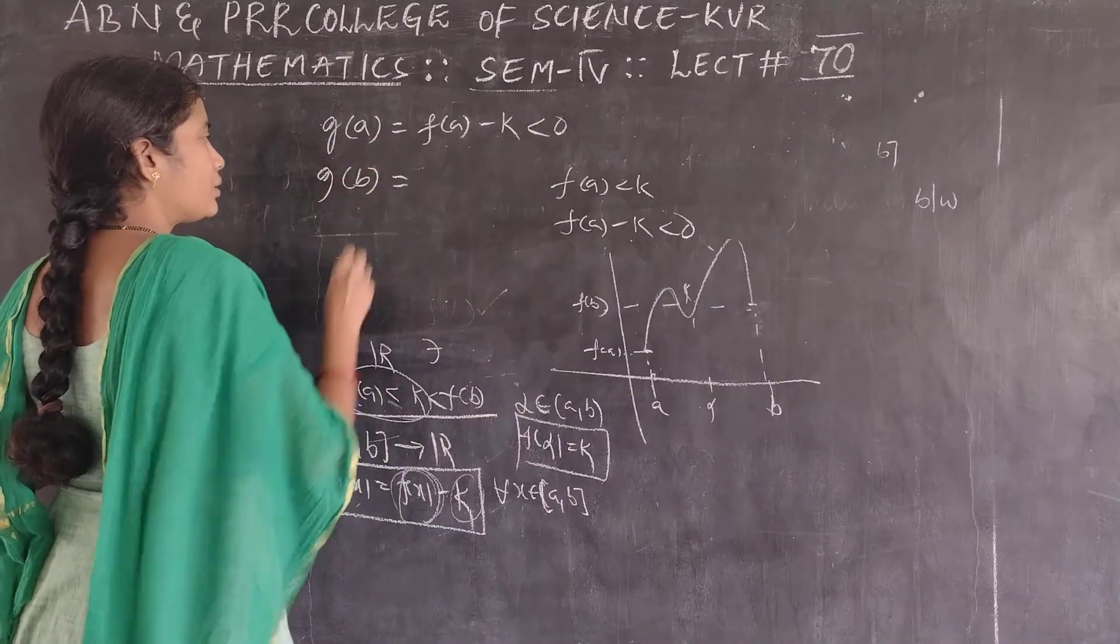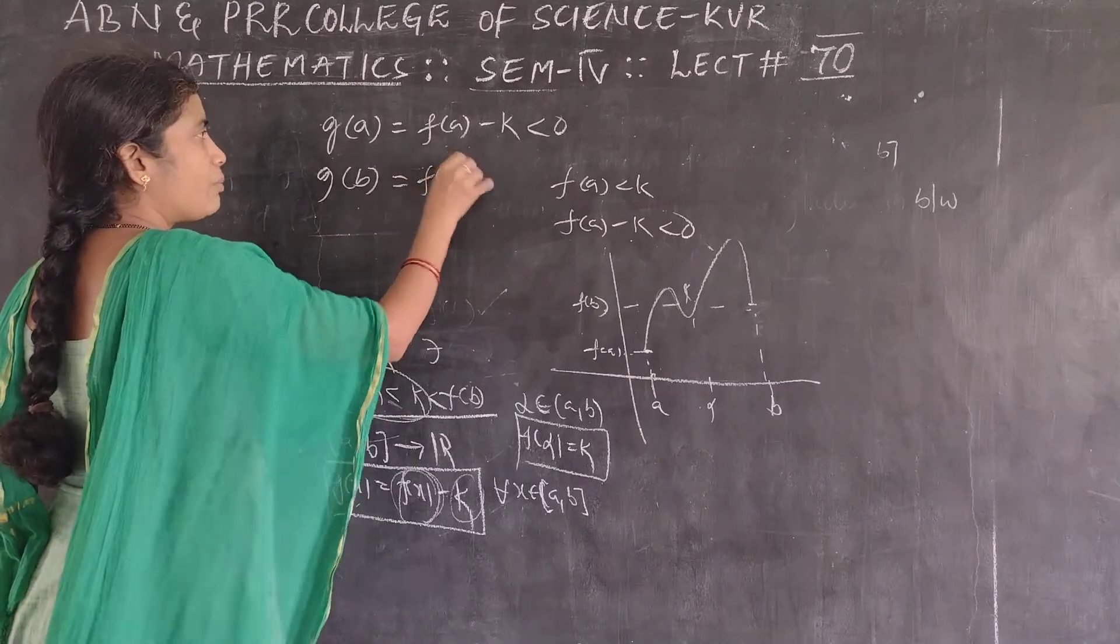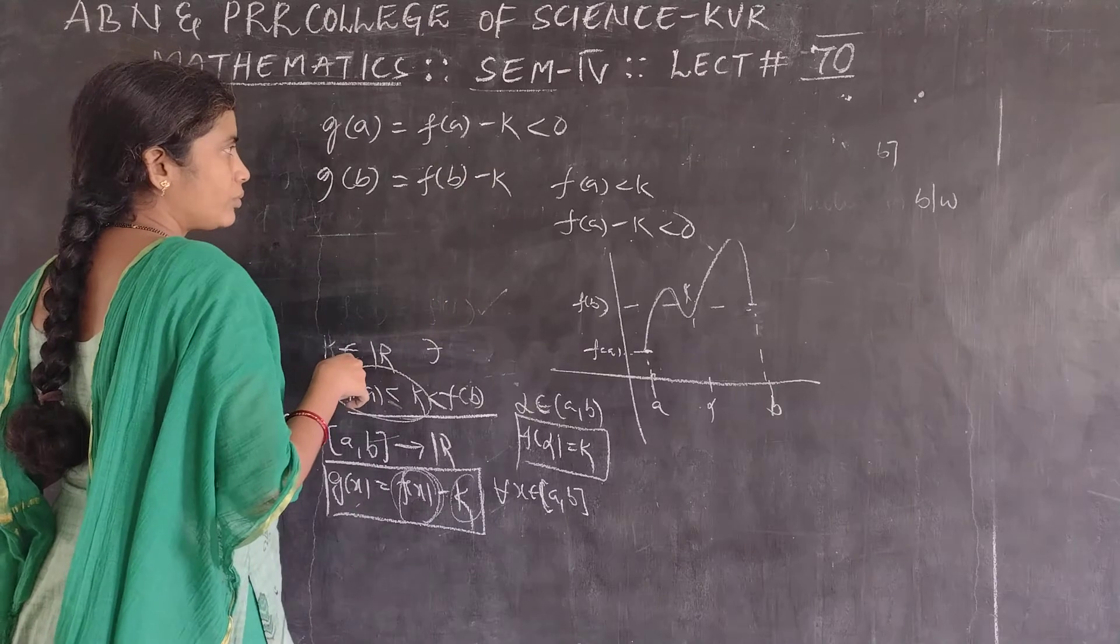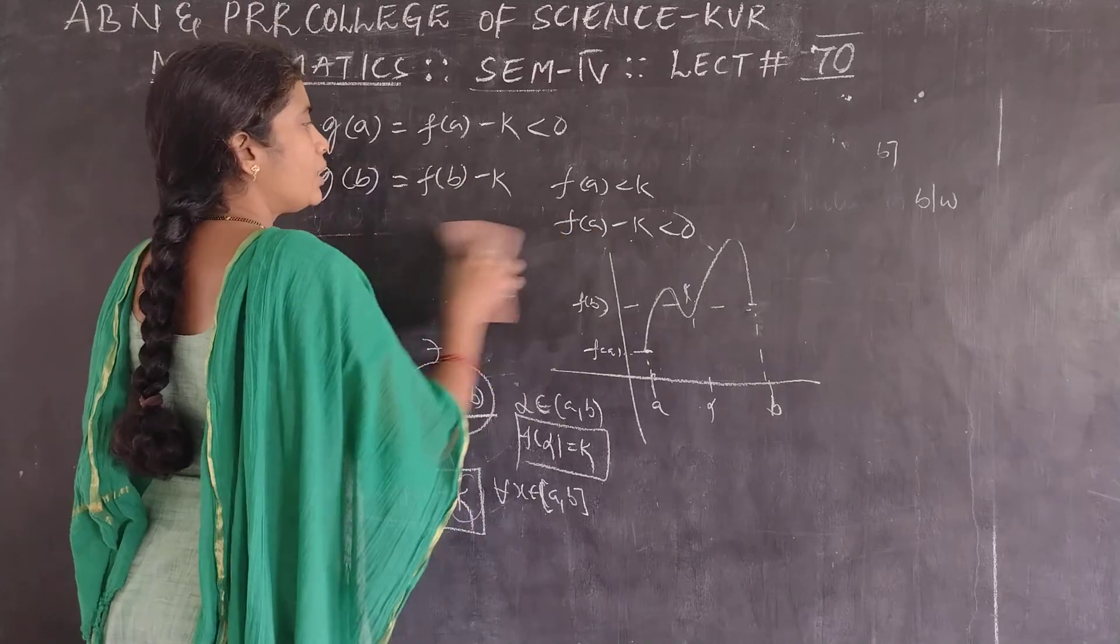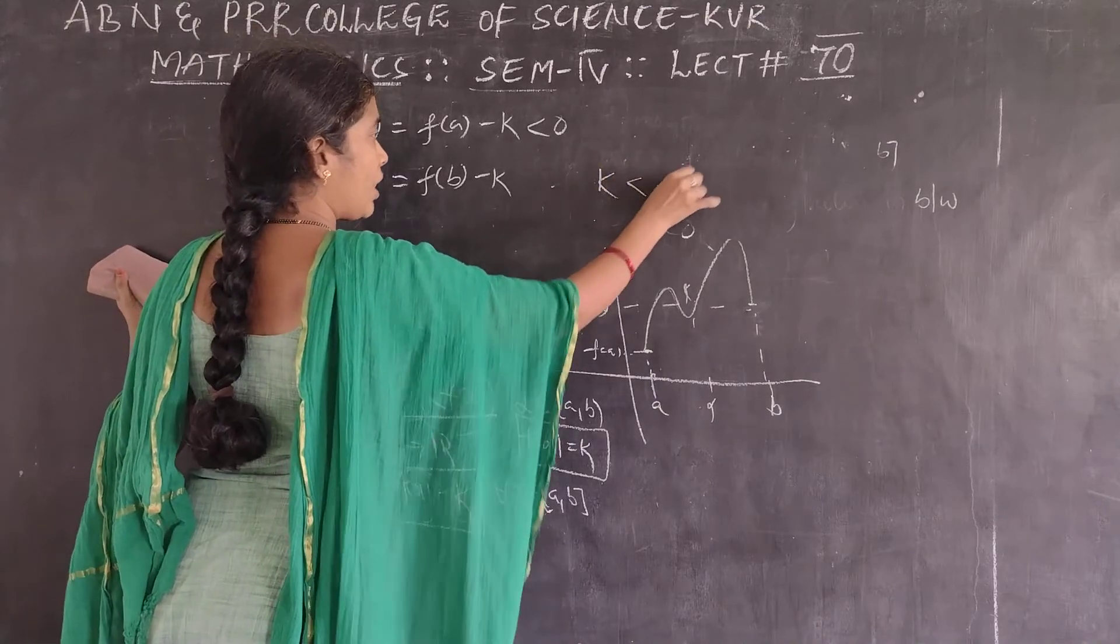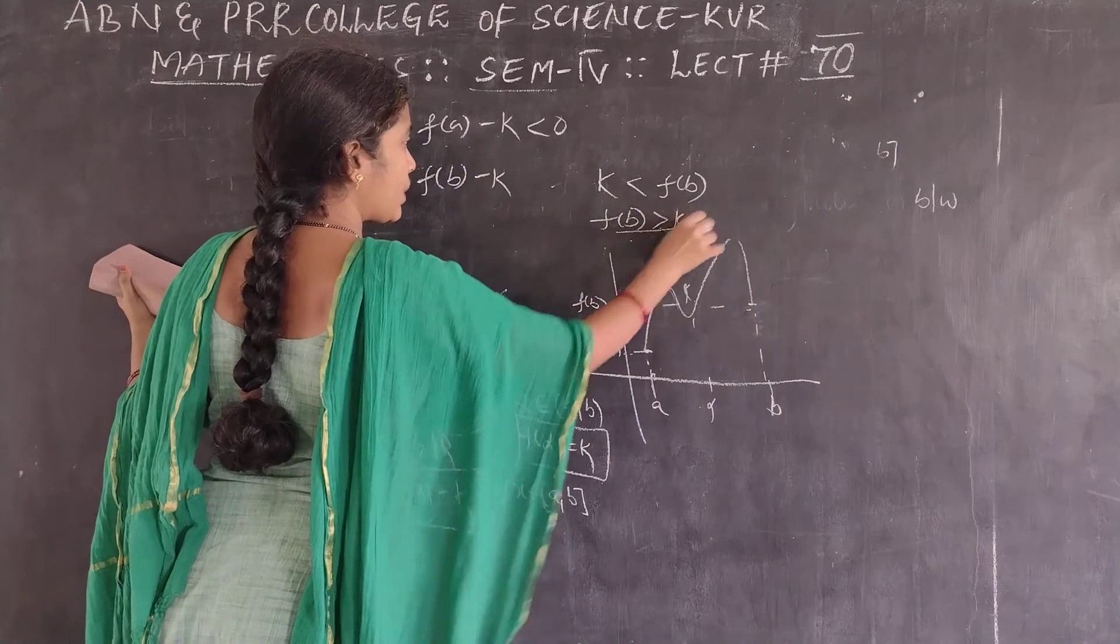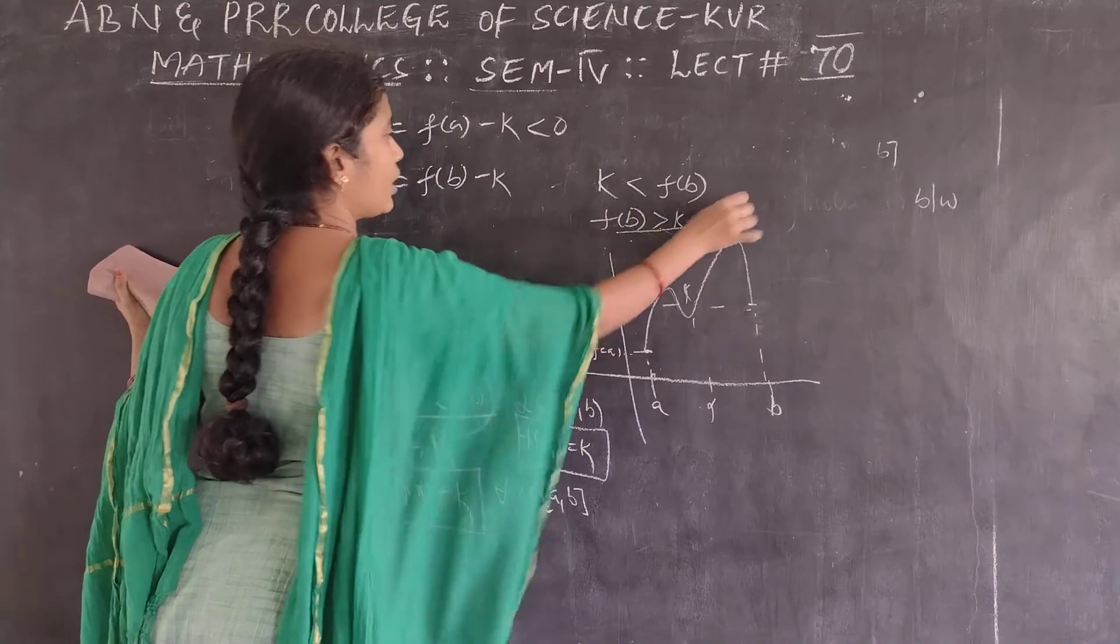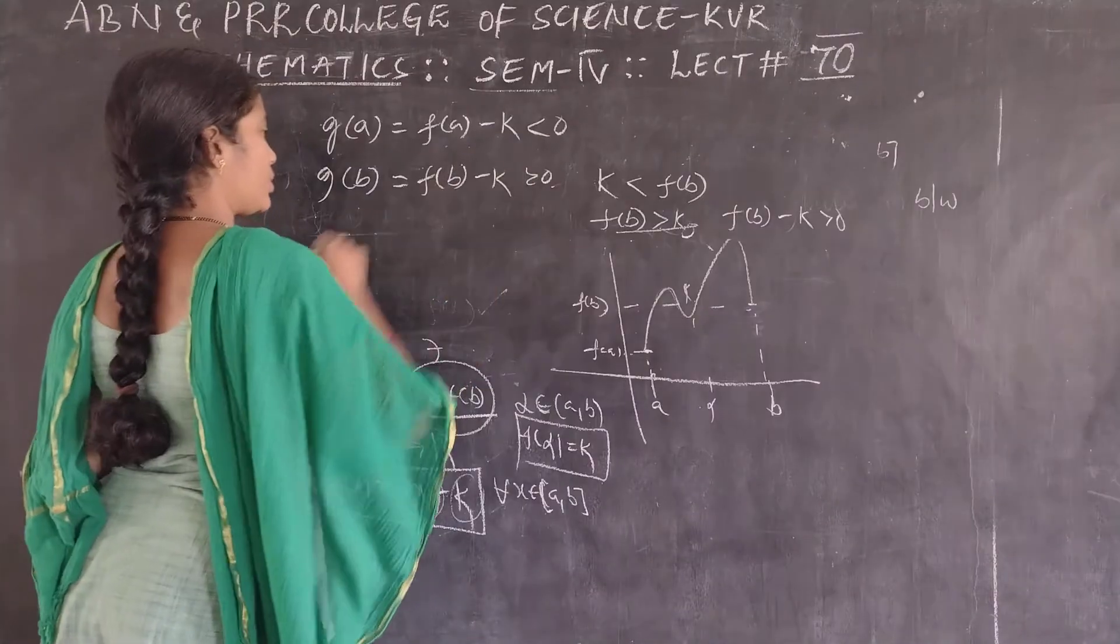Next, g of b is f of b minus k. K value is less than f of b, or f of b is more than k. When we take the difference, f of b being the biggest value, subtracting the smallest value gives a positive quantity. So it is positive.